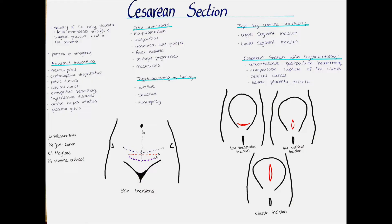A cesarean section is the delivery of the baby, placenta and fetal membranes through a surgical procedure where the surgeon makes a cut in the abdomen. It can occur planned or as an emergency procedure.